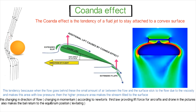This also explains why the ping pong ball doesn't drop from the streamlines of a hairdryer. When the ball goes, for example, to the right side, the left side has a lot of streamlines. These streamlines take a curved path and provide a force in the opposite direction, making the ping pong ball return to the equilibrium position.